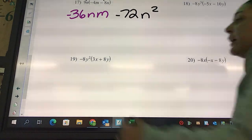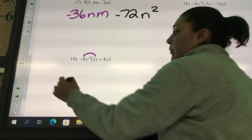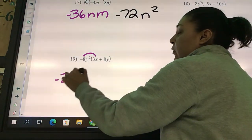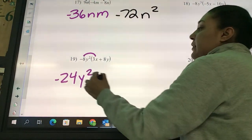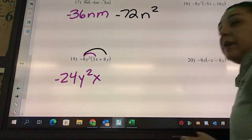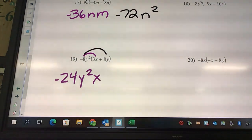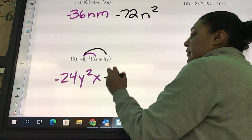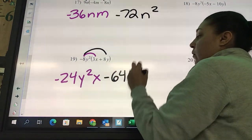Problem 19. I got negative 8 times 3, negative 24, y²x. And then negative 8 times 8 is negative 64, y³.